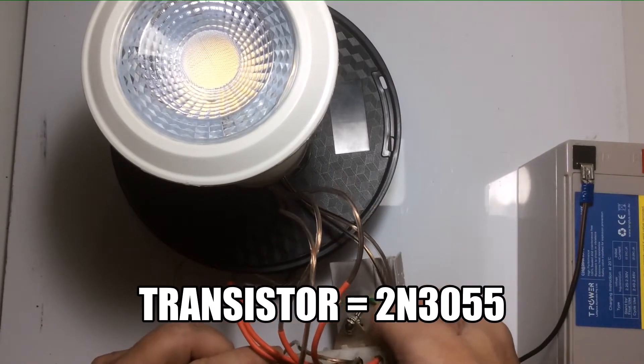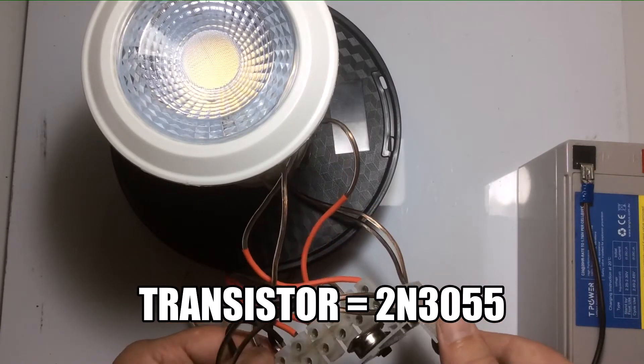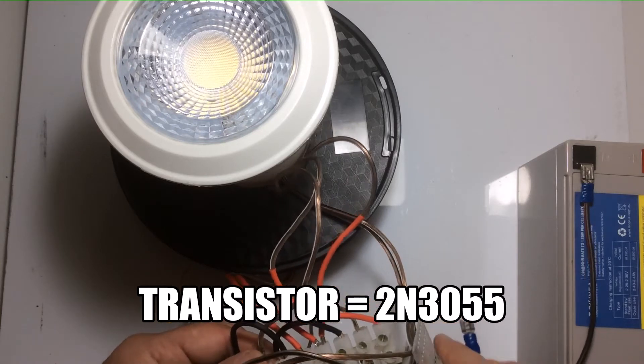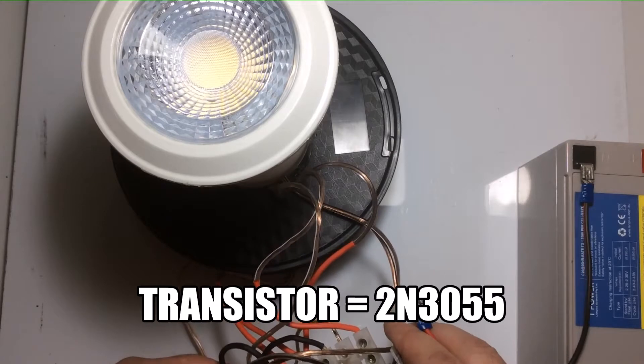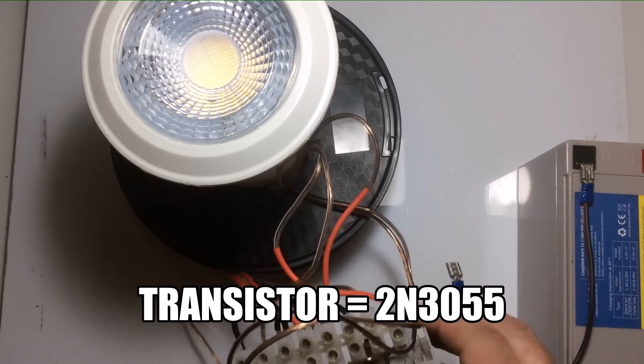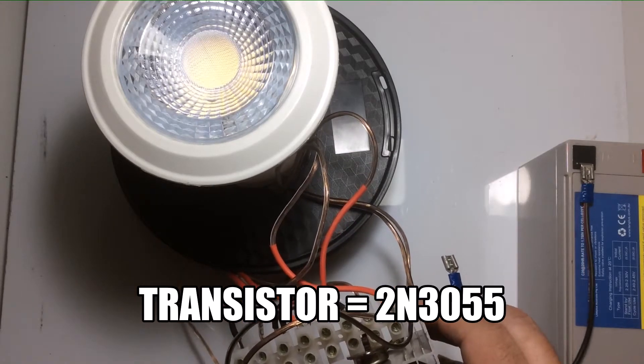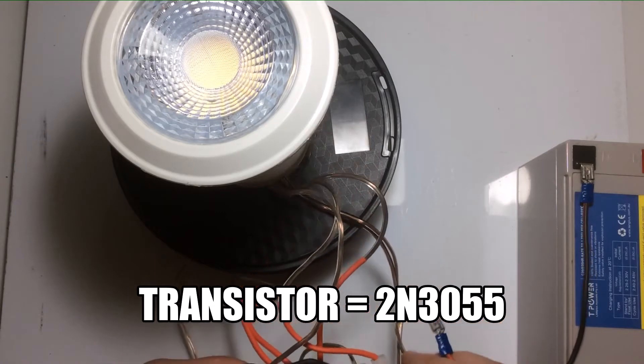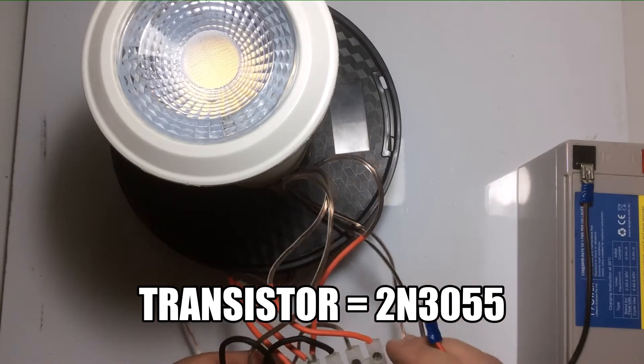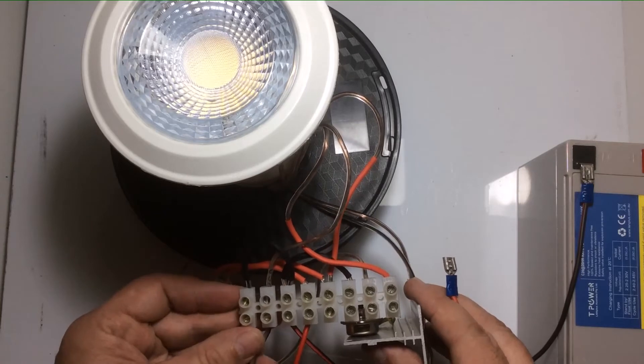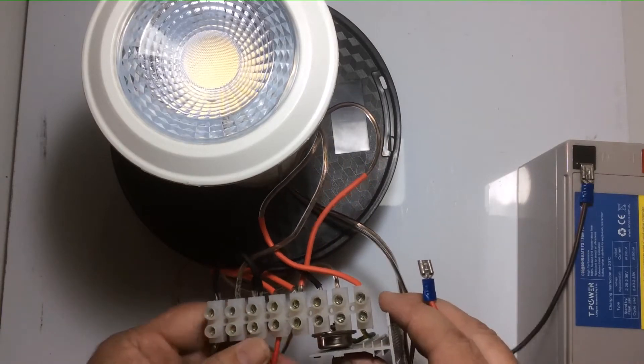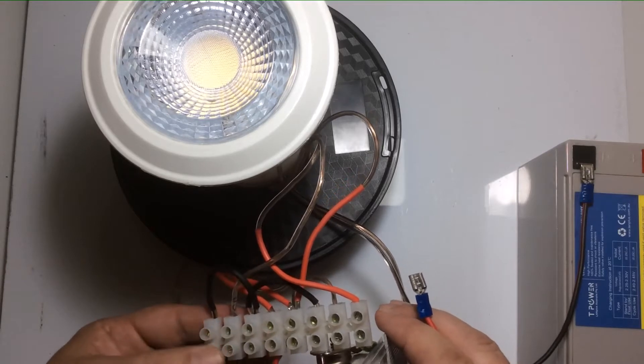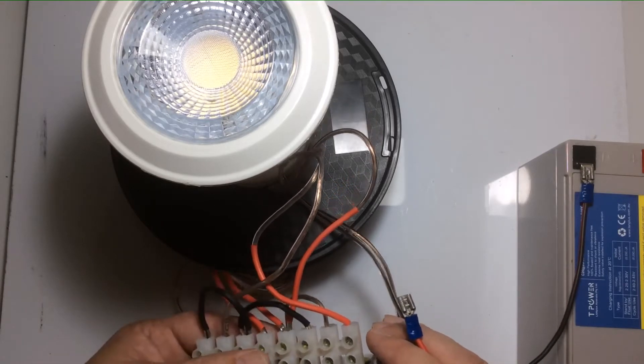It just uses a single 2N3055 transistor mounted on a heat sink. It does get hot. If you don't want to put the heat sink on, you'll probably blow up a few more transistors. In one of my other videos you can see the wiring layout for this particular light.